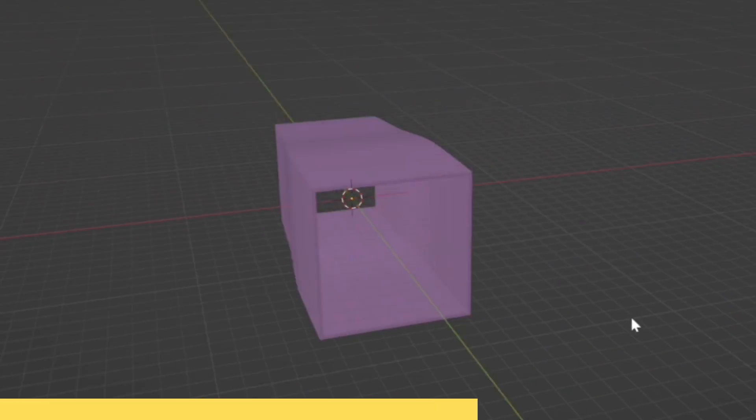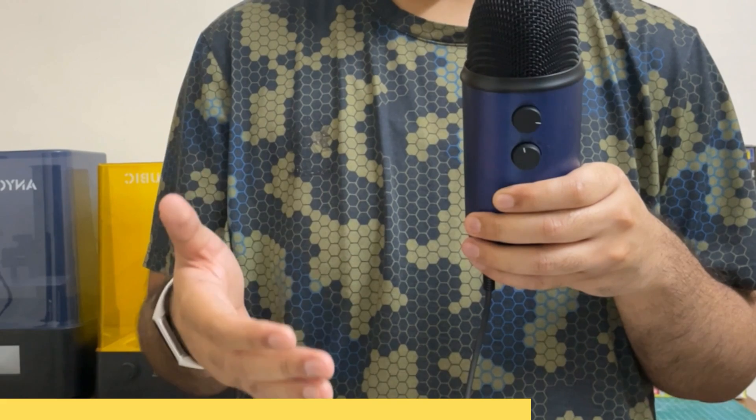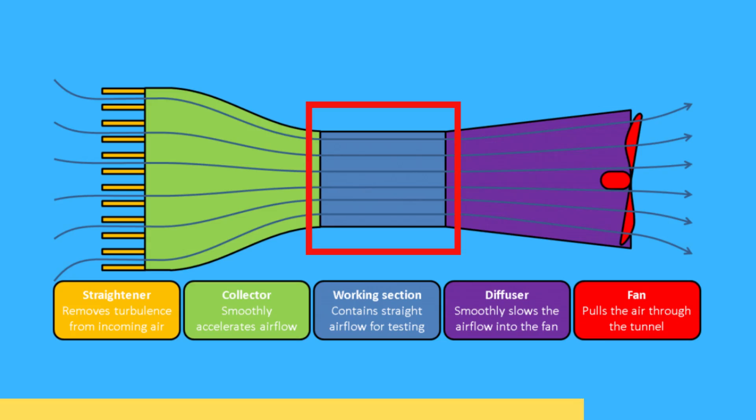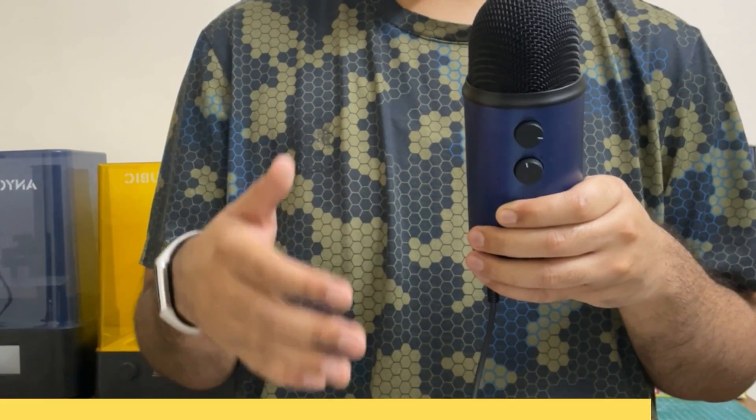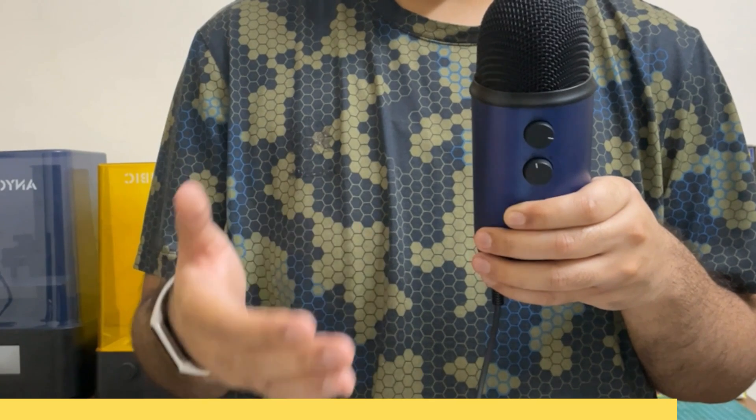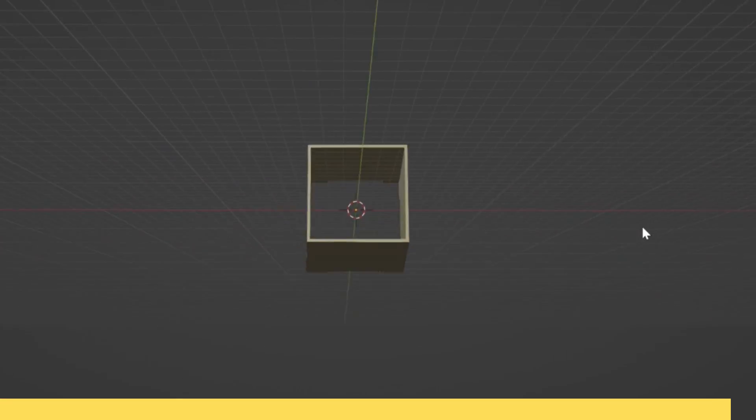After this we have the main test chamber where we have a lot of straight flowing laminar air, and usually this is where we install a see-through window to look at the airflow. The last part is the diffuser, which gradually slows down the air that gets sucked into the fan. And yeah, that's about it.